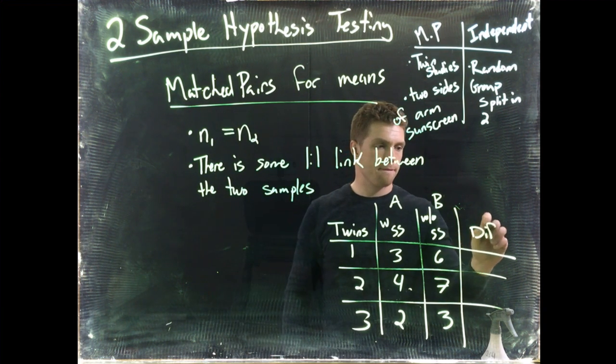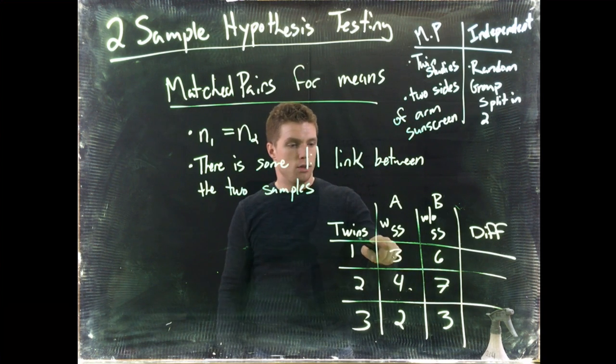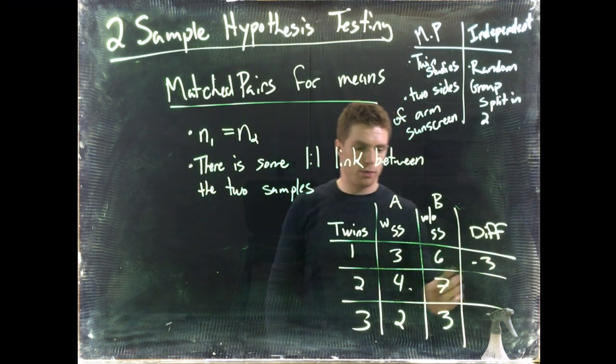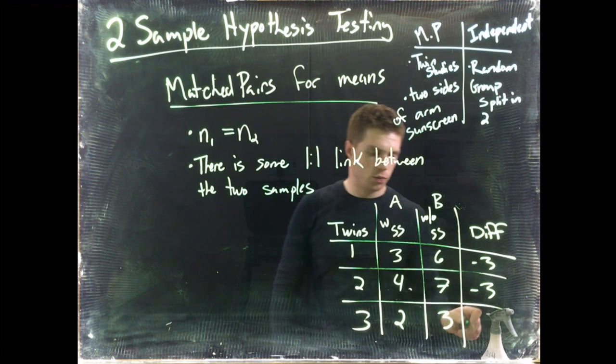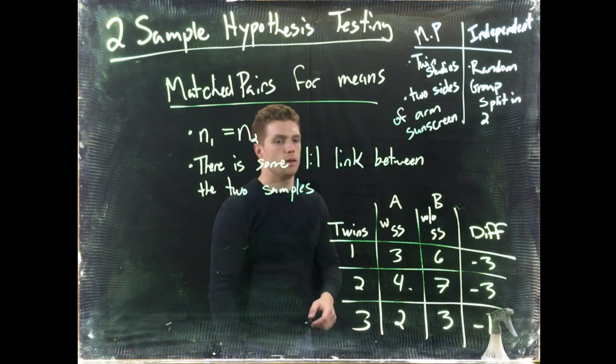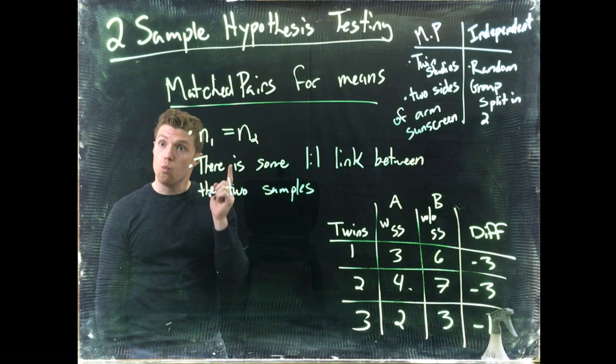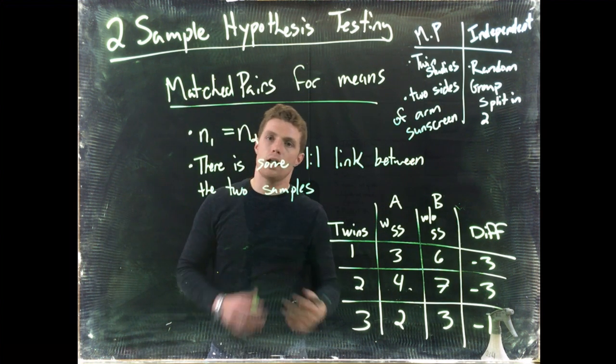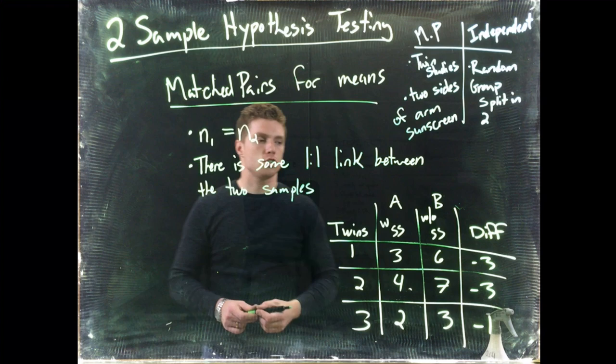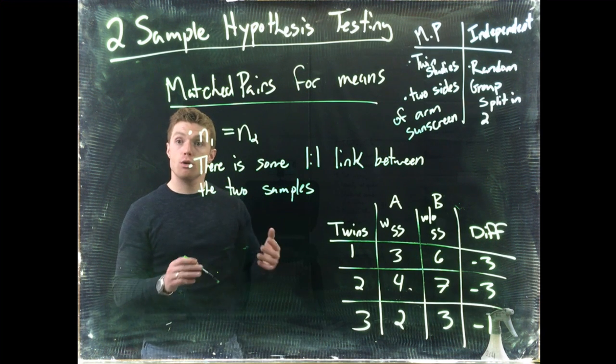But we could just look at the differences and say 3 minus 6 is negative 3, 4 minus 7 is negative 3, and 2 minus 3 is negative 1. And so we could consider this as really a one-sample test when we just look at the differences.